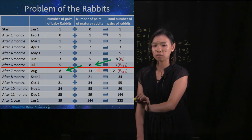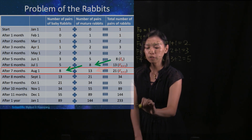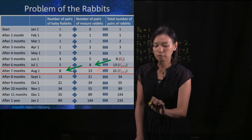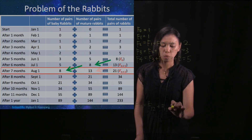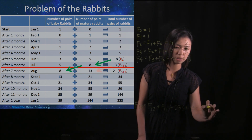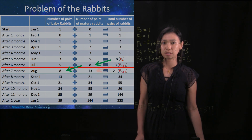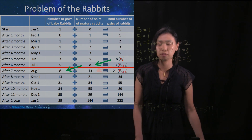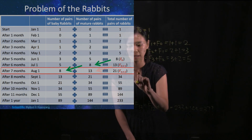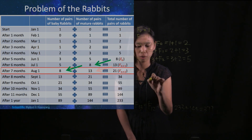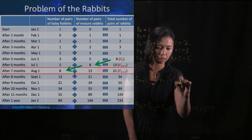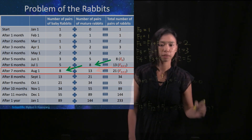If we would like to know the total number of pairs of rabbits after 13 months, meaning that we would like to find F13, then it is F12 plus F11, which is 233 plus 144, which is 377, meaning that there are 377 pairs of rabbits after 13 months. So to generalize what we have written down here, we notice that F(n+2) is equal to F(n+1) plus Fn, when n is greater than 0.